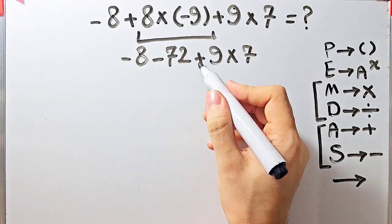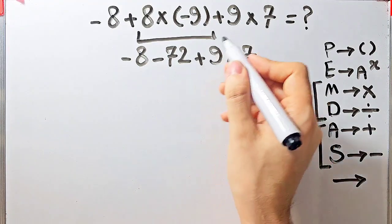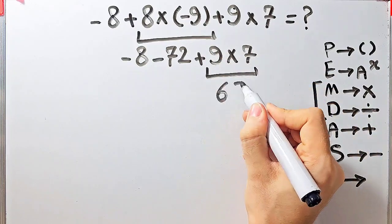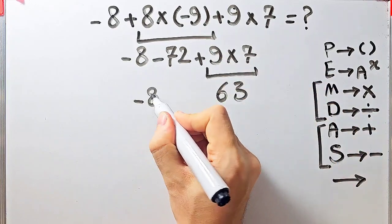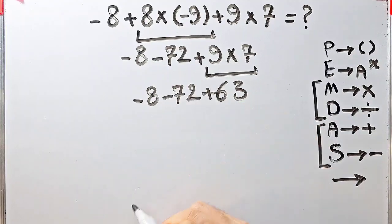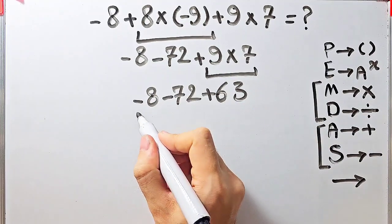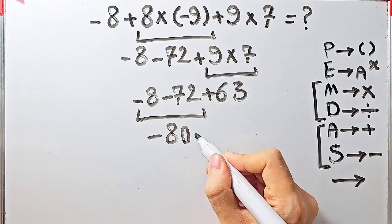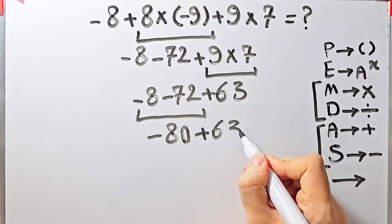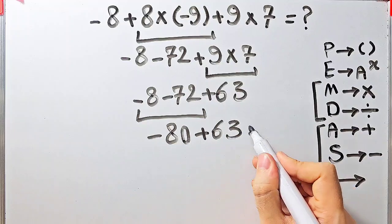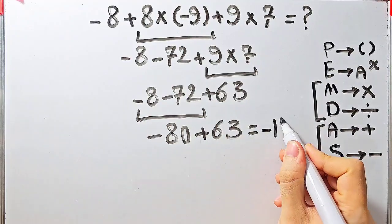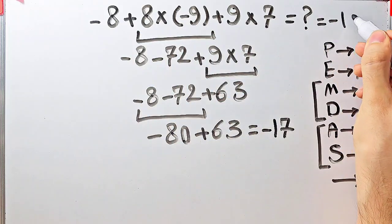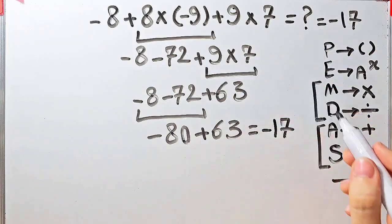Now we have subtraction, addition, and multiplication. We simplify the next multiplication: 9 times 7 equals 63. Now the question is negative 8 minus 72 plus 63. Negative 8 minus 72 equals negative 80. Negative 80 plus 63 equals negative 17. The final answer of this question equals negative 17.